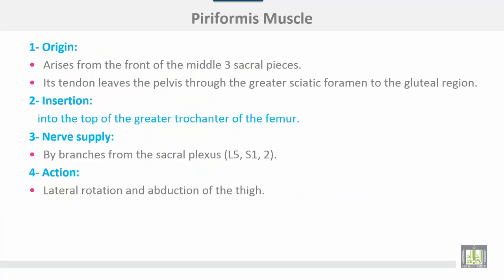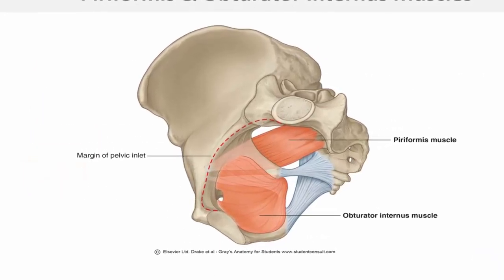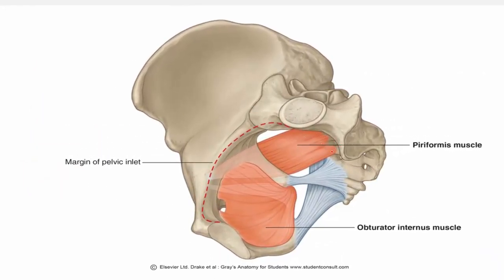Piriformis muscle, number one pelvic muscle, takes origin from the front of the middle three sacral pieces. Its tendon exits the pelvis through the greater sciatic foramen to the gluteal region. Insertion is into the top of the greater trochanter of the femur. Nerve supply is from branches of the sacral plexus L5, S1 and S2. Action: lateral rotation and abduction of the thigh.